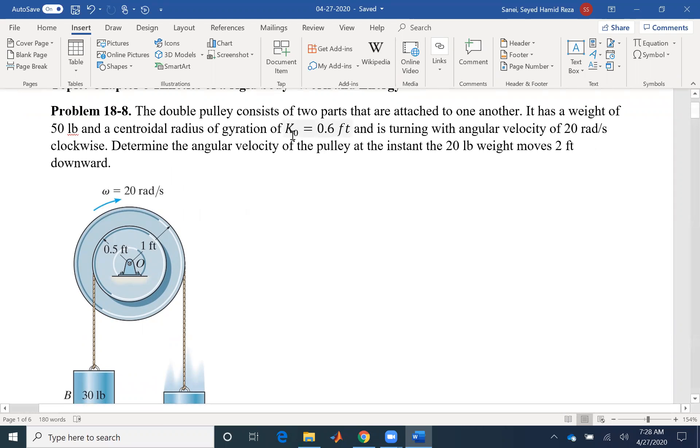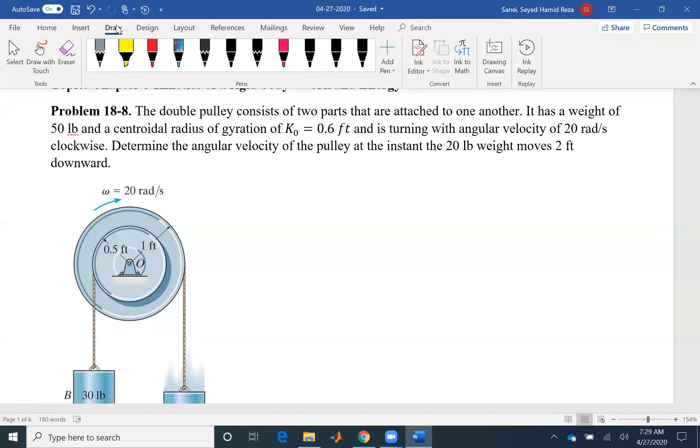And a radius of gyration of 0.6 feet. So when we have radius of gyration of the whole system, then we have the moment of inertia. We talked about four different geometries. Instead of memorizing different equations, usually the problem is giving us the radius of gyration. And it's turning with angular velocity of 20 radians per second. So we have initial angular velocity. If you write our known values, we have omega one to be 20 radian per second. Determine the angular velocity of the pulley.